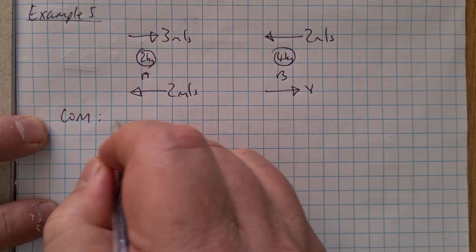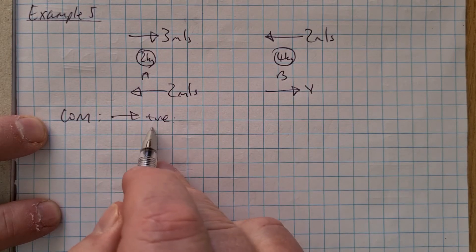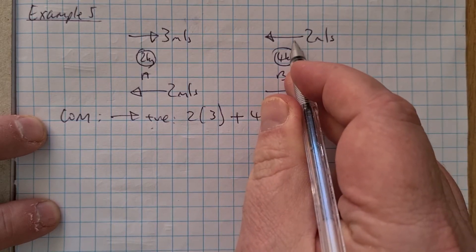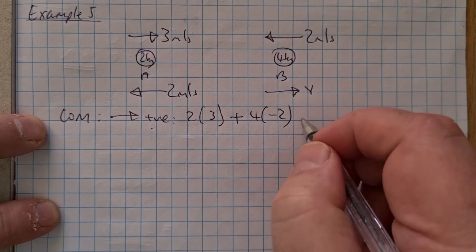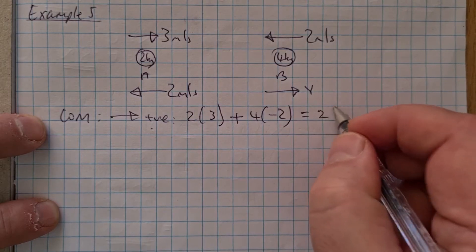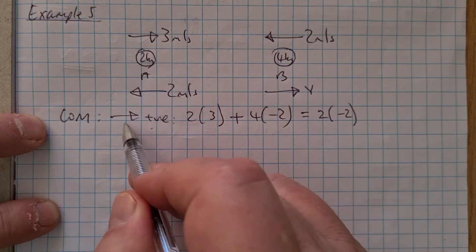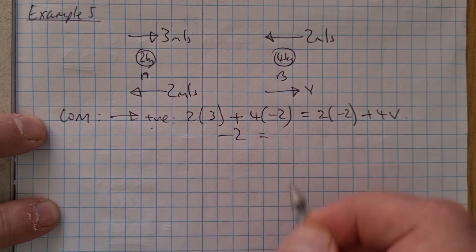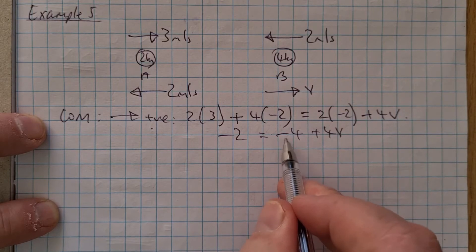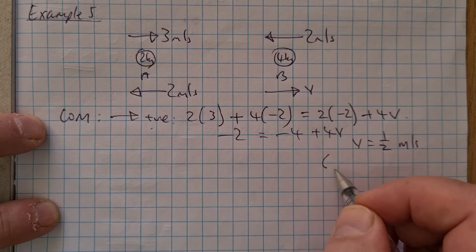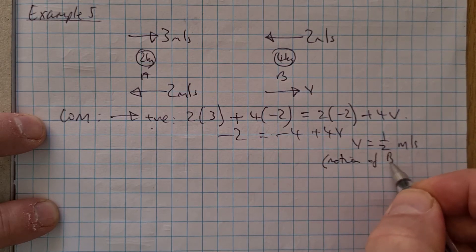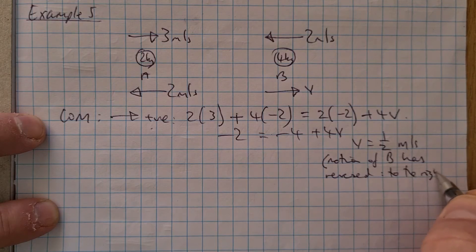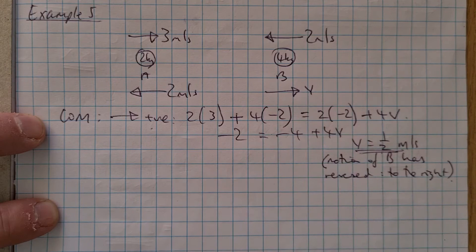Using conservation of momentum, taking to the right as positive. Our initial momentum is 2 × 3 plus 4 × (−2), because B is travelling in the opposite direction. That equals the total momentum after the collision: 2 × (−2), because A's new velocity is to the left, plus 4V. So we have 6 − 8 = −4 + 4V, giving minus 2 = minus 4 + 4V. Therefore V = ½ m/s. The positive result means the motion of B has reversed — it's now heading to the right, because that value relates to the direction taken as positive.